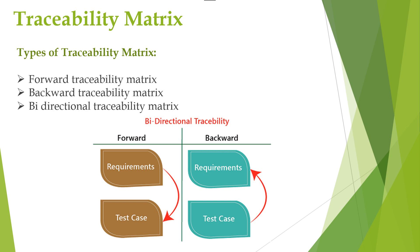We will see bi-directional traceability matrix. It is the combination of both forward traceability matrix and backward traceability matrix.